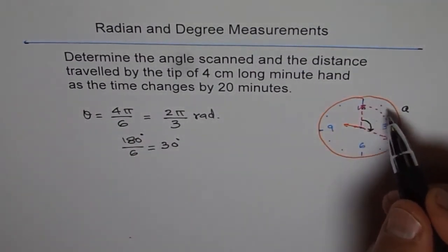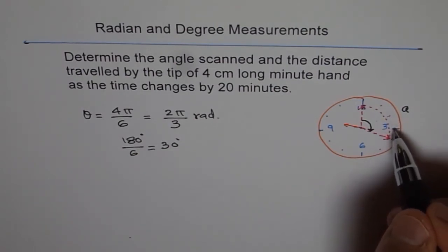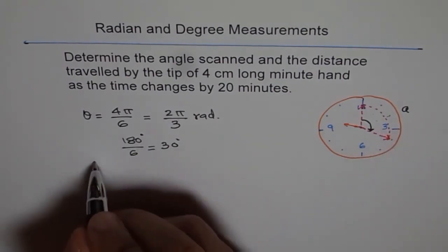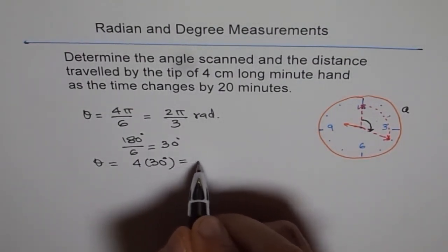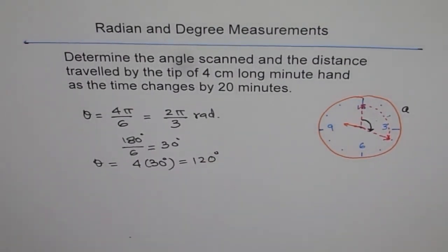So, each is 30 degrees. So, it is 1 times 30, 2 times 30, 3 times 30, and 4 times 30. And therefore, theta equals to 4 times 30 degrees, which is 120 degrees. Correct?